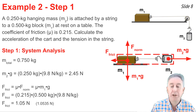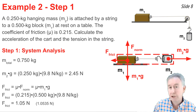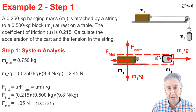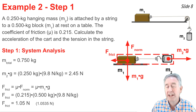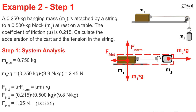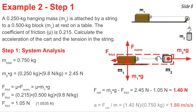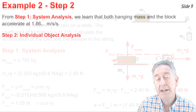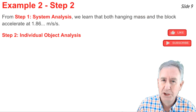Looking at the free body diagram, two forces balance, leaving the rightward and leftward forces. F_net = M2G − f_friction = 2.45 − 1.05 = 1.40 N. Using a = F_net / m = 1.40 / 0.750 = 1.86 m/s².